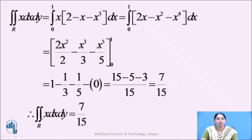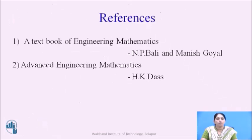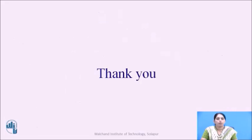Therefore, the value of the double integral over R of x dx dy equals 7 over 15, where R is the region bounded by the curves y equals x cubed, x plus y equals 2, and x equals 0. Thank you.